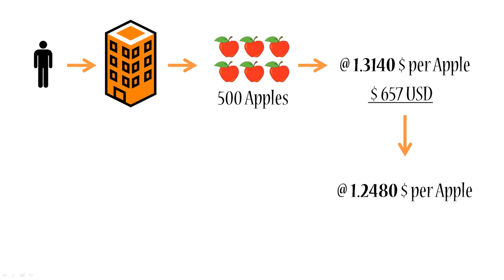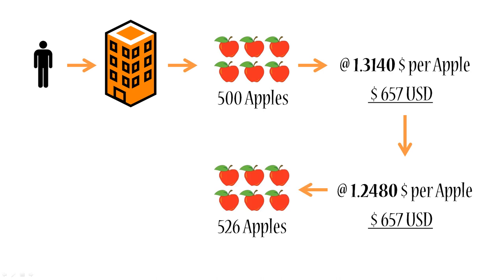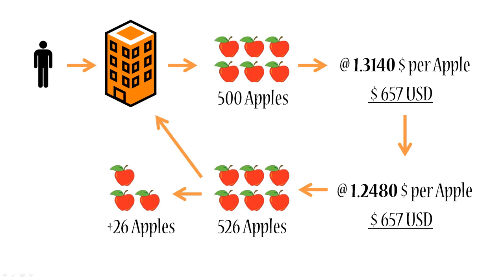Once the price for apples drops and hits about 1.2480 American dollars per apple, you still have those 657 dollars that you got in exchange for your apples a couple of days or weeks earlier. So what are you going to do with these 657 dollars? You're going to go and buy back apples. Now with your 657 dollars, you can buy 526 apples. You still have to return 500 apples to your broker, and that's exactly what you do. You return 500 to the broker, and that means you still have 26 apples of profit in your hands. You convert those 26 apples back into US dollars at the exchange rate at the time, giving you a profit of 32 US dollars.